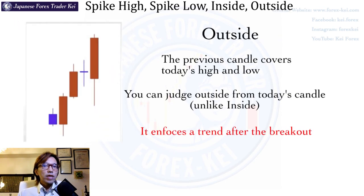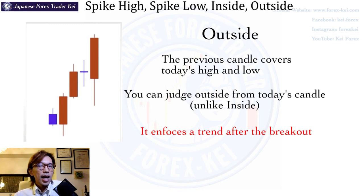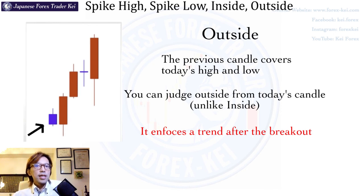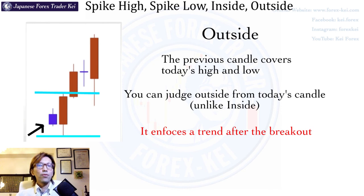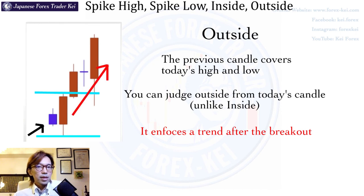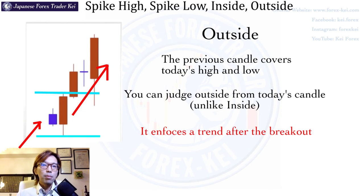Moving on to the next one — it's called the outside bar. What this price action means is that today's candle completely engulfs the previous day's high and low. So in this chart example, the high and low of this blue candle are completely within — covered by — the next day's candlestick. Inside was the other way: inside was when the previous candle covers today's candle, but outside is when the next day's candle covers today's candlestick. When you see a pattern like this, most likely it shows a continuation of the trend in the direction of the breakout of the next day candle. When there's a continuous bull trend and you find this outside bar, it indicates the bullish trend may persist.